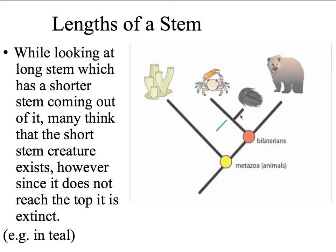Lengths of a stem. While looking at this picture, we see three large stems here, here, and here. We see one small stem here. While looking at this, we know that these three fairly large stems, species still exist.